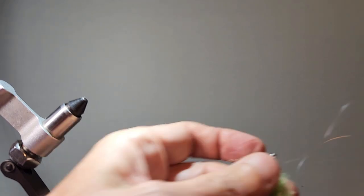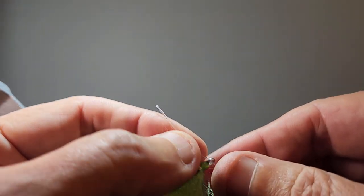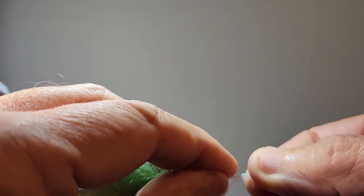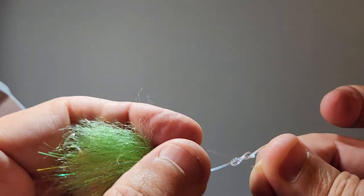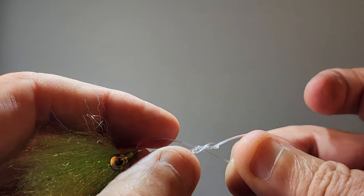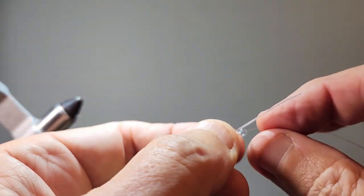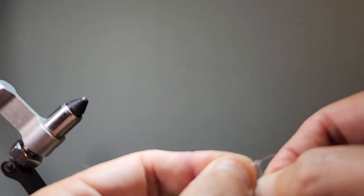Then you take your fly and you take the tag end and you put it through the eye of the fly and you take the other end and you put it through where the tag end comes out of the knot and you then flip it over and you put it through the base side right there.